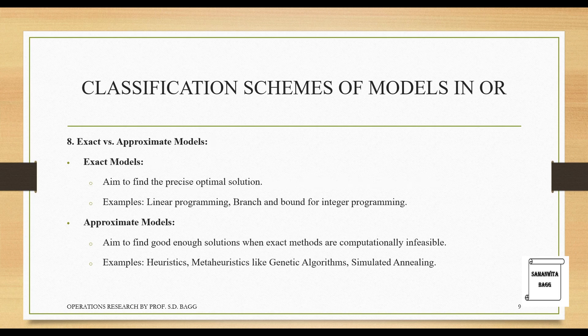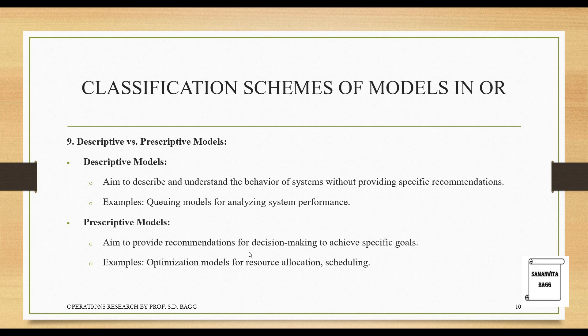Exact versus approximate models: exact models aim to find the precise optimal solution. Examples include linear programming and branch-and-bound for integer programming. Approximate models aim to find good-enough solutions when exact models are computationally infeasible. Examples include heuristics and meta-heuristics like genetic algorithms and simulated annealing.